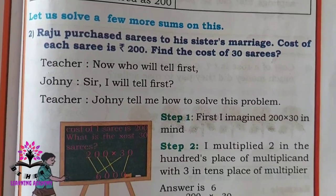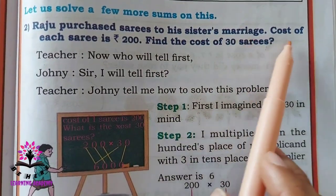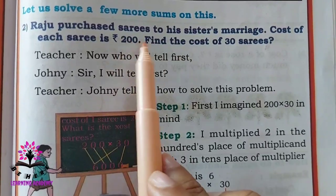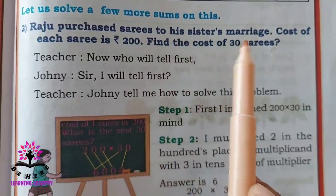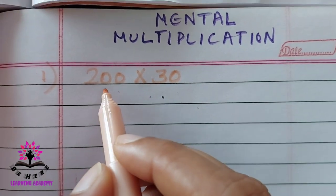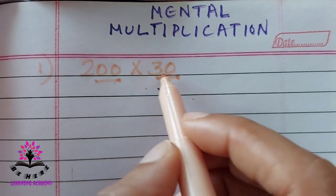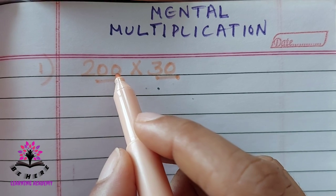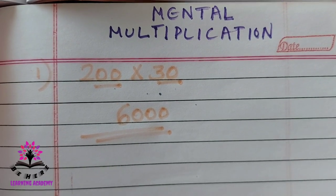Now let us study a few problems related to mental multiplication. Raju purchased sarees for his sister's marriage. The cost of each saree is 200. Find the cost of 30 sarees. You have to multiply 200 by 30. There are two zeros in 200 and one zero in 30. Just multiply the digits: 2 times 3 is 6. Then count the zeros — there are three zeros. The answer is 6000.